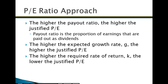The higher the required rate of return (K, discount rate, cost of capital), the lower the PE — more risk means lower PE. So PE multiple decreases with slower growth and more risk, pushing stock price down. PE multiple increases with higher payouts, higher growth, and less risk — the stock becomes more valuable. As stock price increases relative to earnings, the PE multiple naturally rises.